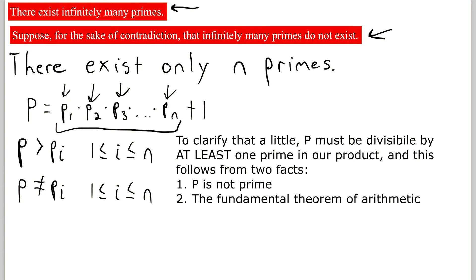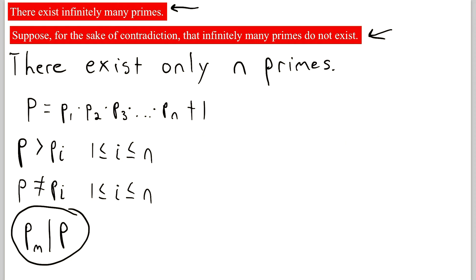Thus, P must be divisible by one of the primes in this product. So we know that some prime, we'll call it Pm, divides our number P. We know this is true for some m greater than or equal to 1 and less than or equal to n, because again, our number P isn't prime. So it's got to be divisible by one of these guys.